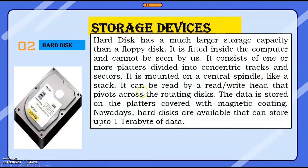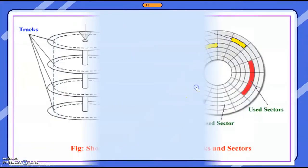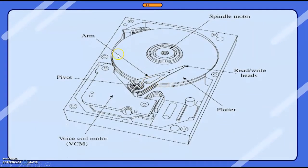The hard disk consists of two or more platters divided into concentric tracks and sectors. It is mounted on a central spindle like a stack. It can be read by a read/write head that pivots across the rotating disk. The data is stored on the platters covered with a magnetic coating. Nowadays hard disks are available that can store up to one terabyte of data. The read/write head moves across the platters to read the data stored on the sectors.